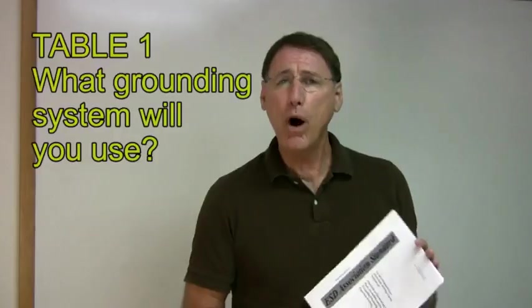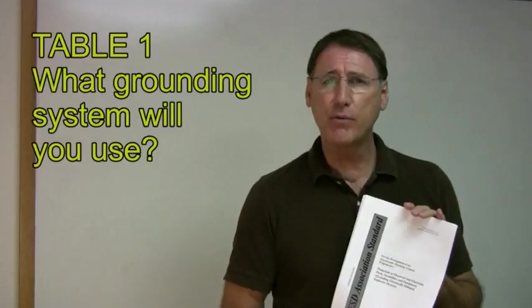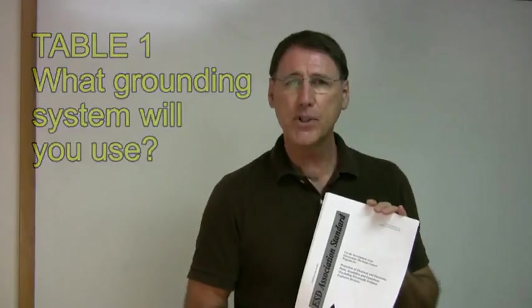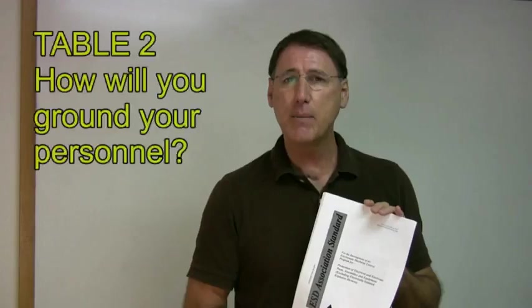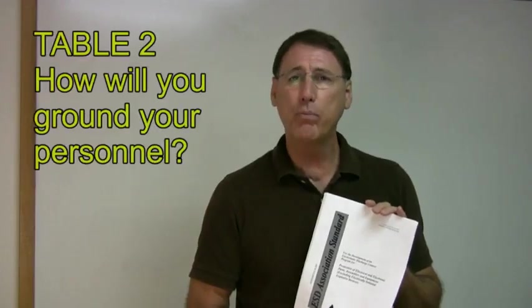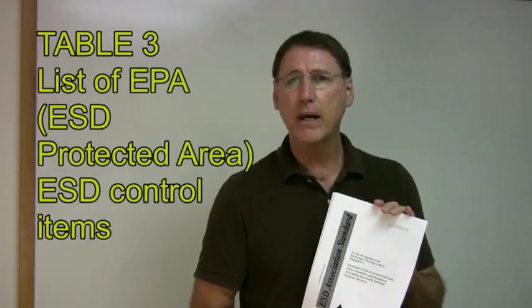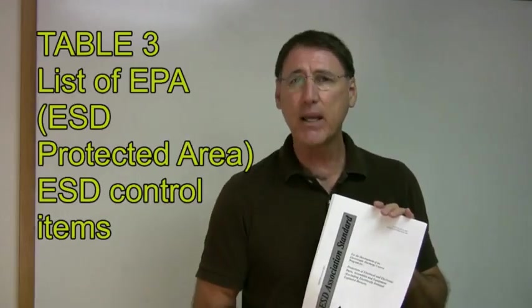Table one in the 2007 version of S 2020 is what grounding system you will use. Table two is how you will ground your personnel and table three lists quite a variety of EPA ESD protected area ESD control items like work surfaces, ionizers, garments.